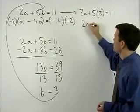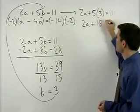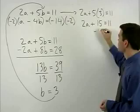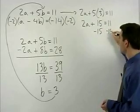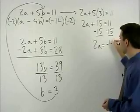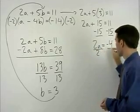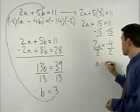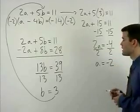That simplifies to 2a plus 15 equals 11. Subtracting 15 from both sides gives us 2a equals negative 4. Dividing both sides by 2, we have a equals negative 2.